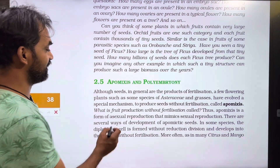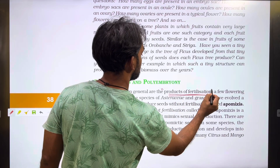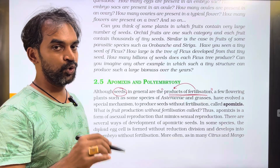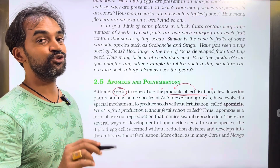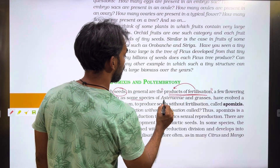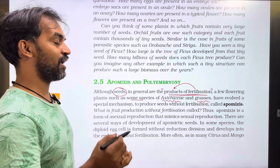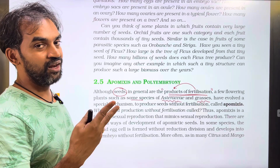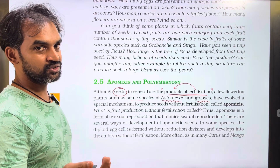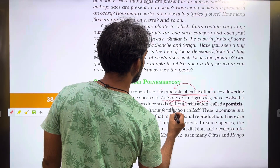Although seeds in general are the products of fertilization — male gamete, female gamete, ovule, ovary, fruit — a few flowering plants such as some species of Asteraceae and grasses, for example sunflower, have evolved a special mechanism to produce seeds without fertilization.